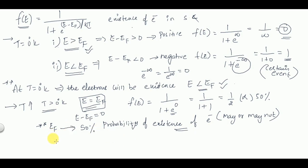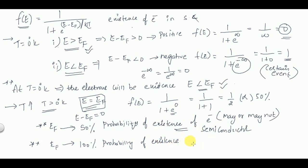So E_F represents 50% probability of existence of electrons in the case of semiconductors. Another most important point: the Fermi energy level represents 100% probability of existence in the case of metals. In metals, free electrons always exist in the conduction band, so there is always existence of electrons at the Fermi level. This is the key difference between Fermi energy probability of existence in semiconductors versus metals.